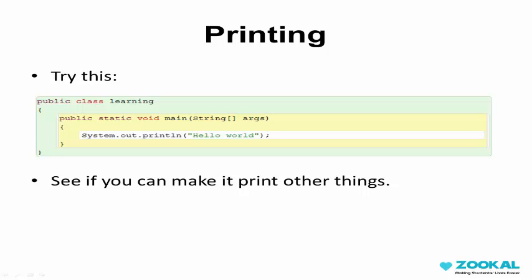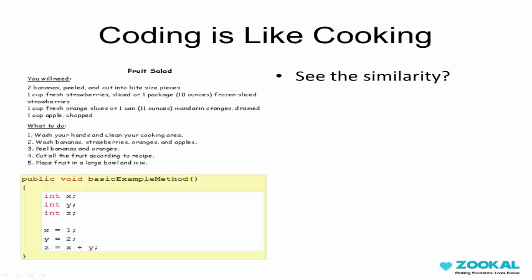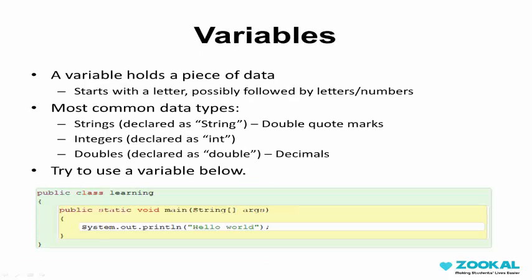Now see if you can modify the code to make it print other things. A little analogy I've come up with to explain coding as if you were five years old is this. Writing code is just like writing a recipe. You've got ingredients and you've got directions. It's pretty much exactly the same with code — you state the things you need and you give instructions involving those things. The ingredients are called variables. A variable holds a piece of data. So for example, you could have a variable called my phone number and it could contain 0412345678. The most common data types, especially in this subject, are strings and integers.